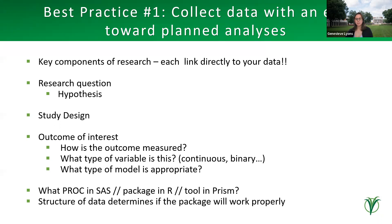Thinking through all of these details will really pay off in the long run. Best practice number one is to think about what your planned analysis is going to be. Identify what the outcome variable is that will answer your research question, and think about how you'll measure it — is it continuous, binary, or another type? Once you've identified this, you've automatically narrowed down the appropriate analyses. For example, you can't do a logistic regression on a continuous variable. Then think about how you'll execute these analyses in your statistical software — what procedure, R package, or tool you'll use — because your data will need to be structured in a certain way for it to work.